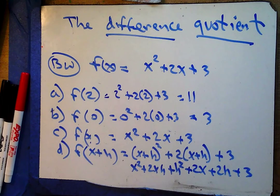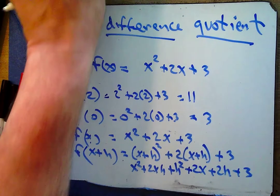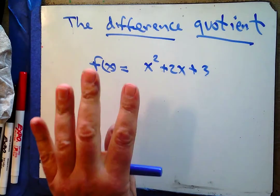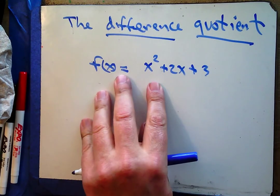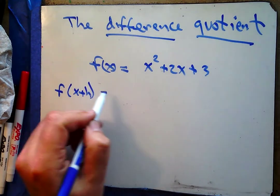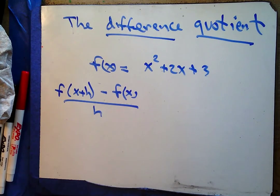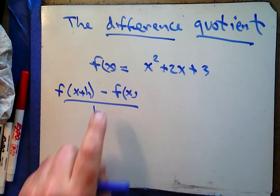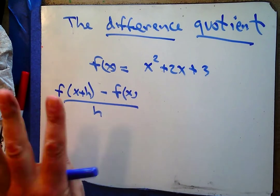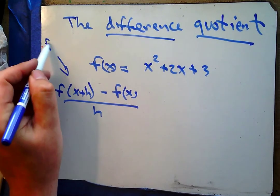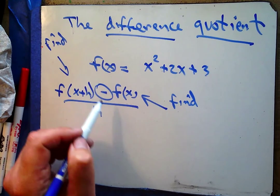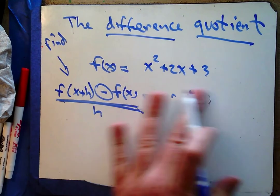Now comes the difference quotient. We're going to be given a function to work with and an expression like [f(x+h) − f(x)] / h. That's an example of a difference quotient — I can tell because I see subtraction and a big division. The way we do a difference quotient is: find f(x+h), find f(x), subtract them, and then divide. Don't get stressed — this is easy.